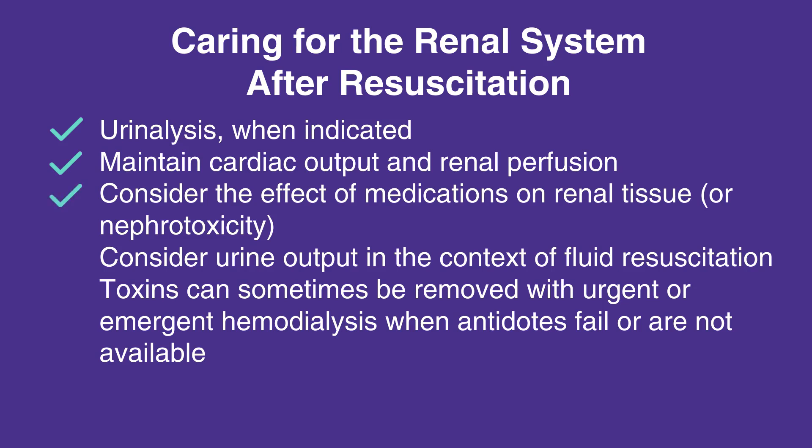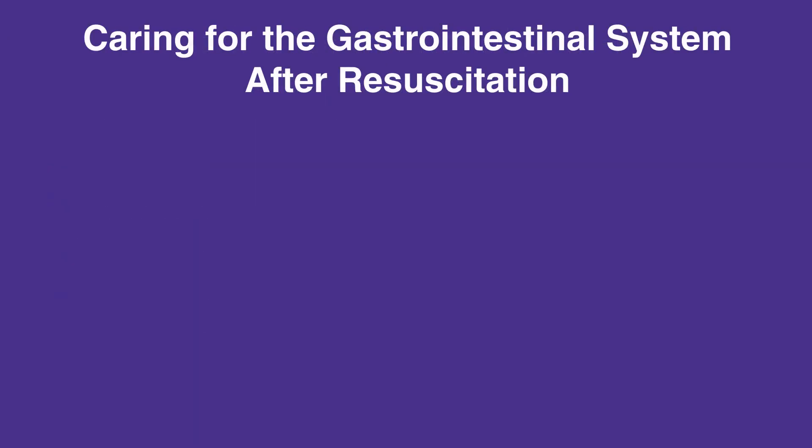Arterial blood gas, or ABG, and correct acid or base disturbances; urinalysis when indicated; maintain cardiac output and renal perfusion; consider the effect of medications on renal tissue or nephrotoxicity; consider urine output in the context of fluid resuscitation. Toxins can sometimes be removed with urgent or emergent hemodialysis when antidotes fail or are not available.